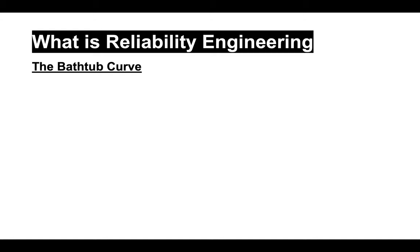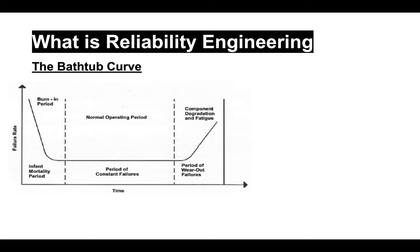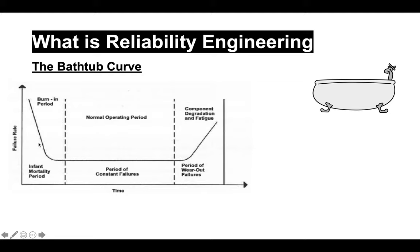One more important concept of reliability engineering that one should be aware of is that of the bathtub curve. It gets its name because its shape is similar to that of a typical bathtub. It is a variation of failure rate with respect to time, and most products or populations of products are said to approximate this curve over their lifetime.